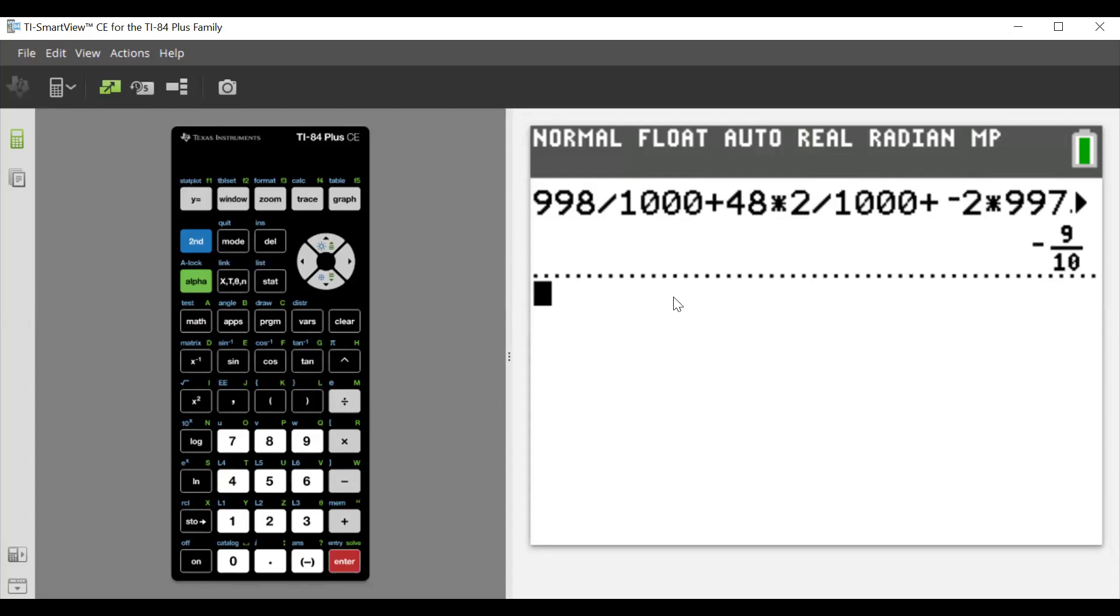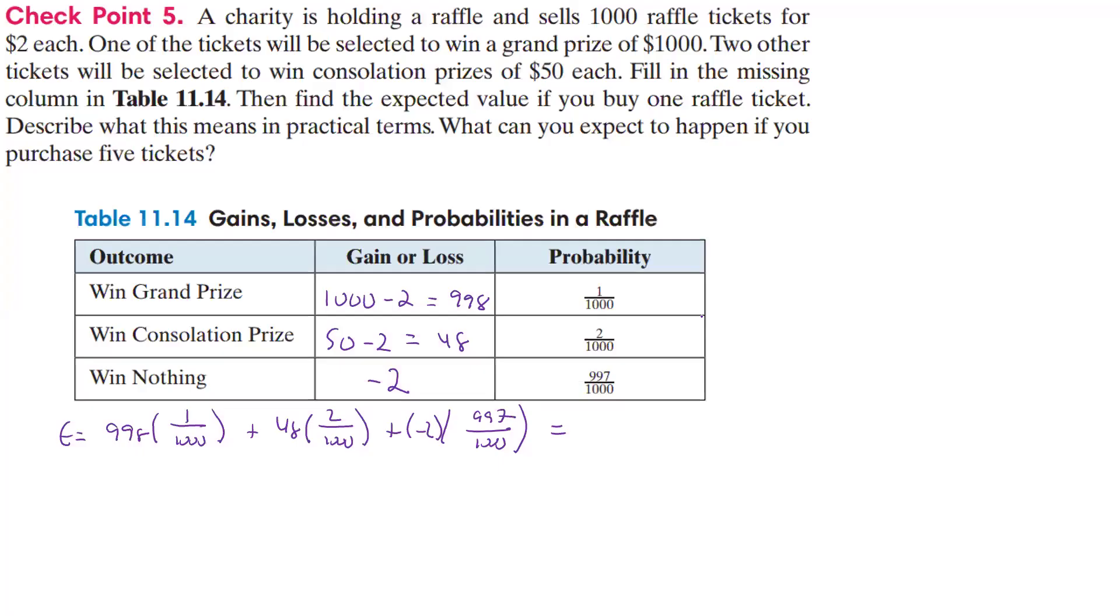And since we're doing money here, what would make sense is if we put this in dollars and cents, so that's going to be a negative 0.90, because again, it was 9 tenths negative, and that's 0.9, and so that would be what it would be in dollars. So in the long run, we're going to lose 90 cents per ticket bought.